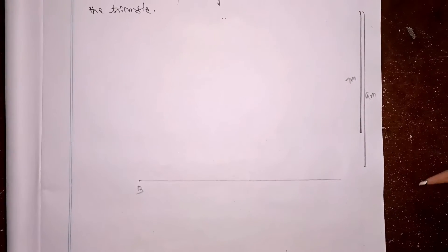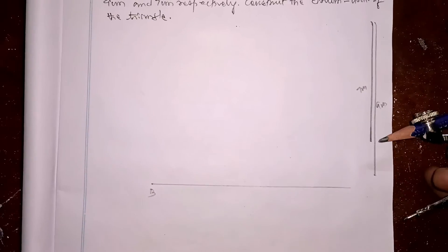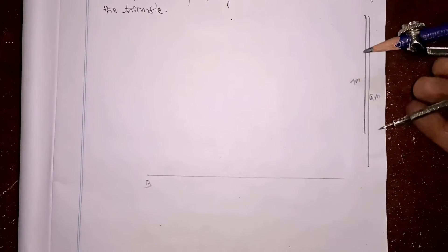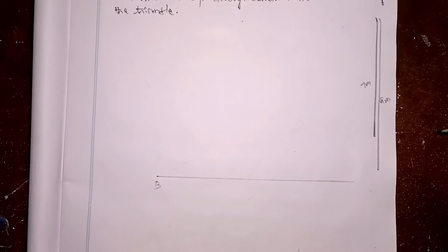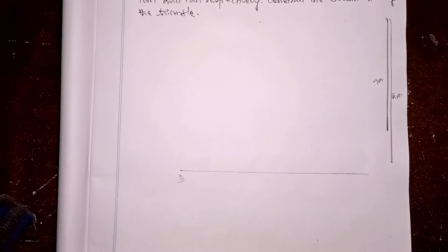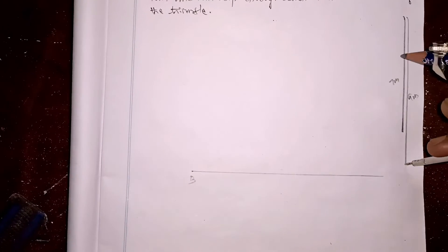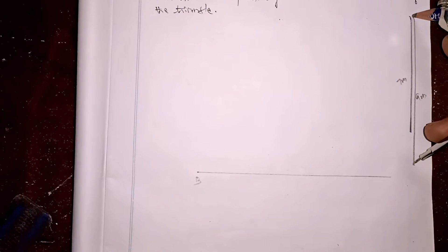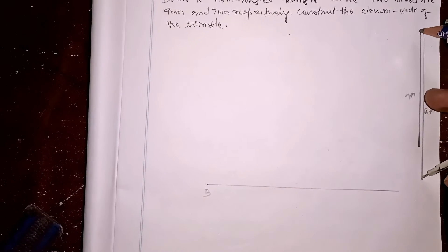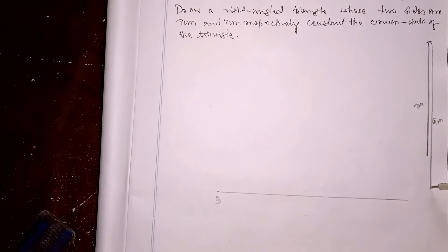First, measure the length 9 cm with the help of your scale. Measure the length 9 cm and just mark BC.